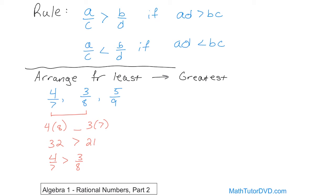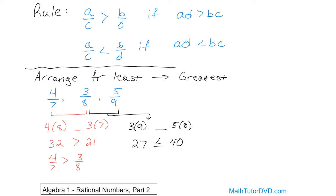That's only half the story because we have another fraction to deal with. Next, let's compare 3 eighths and 5 ninths. Cross multiply: 3 times 9 on one side and 5 times 8 on the other. 3 times 9 is 27, and 5 times 8 is 40. Since 27 is less than 40, the arrow goes the other way — meaning 3 eighths is less than 5 ninths. So 3 eighths is smaller than both of the other fractions.